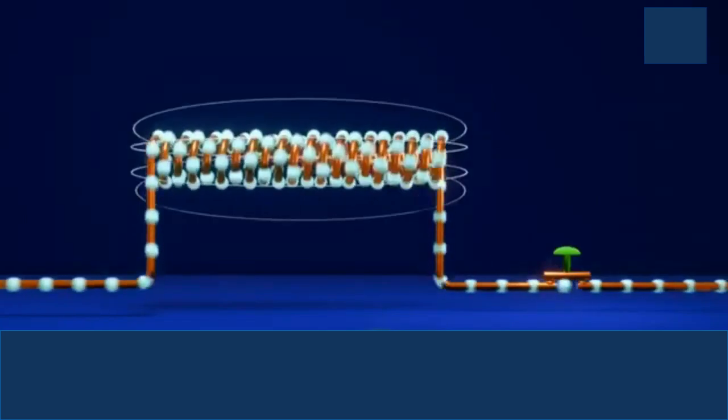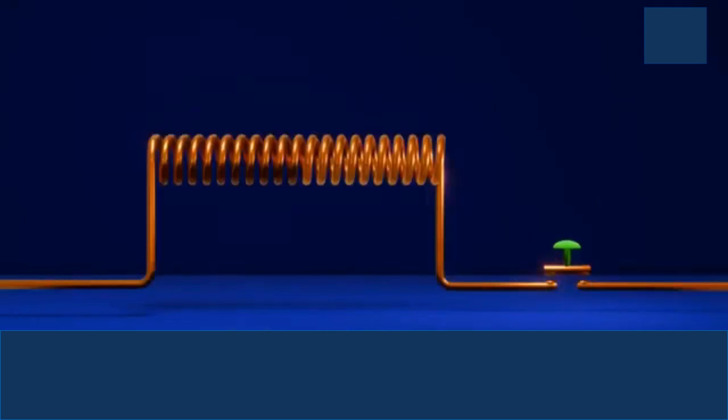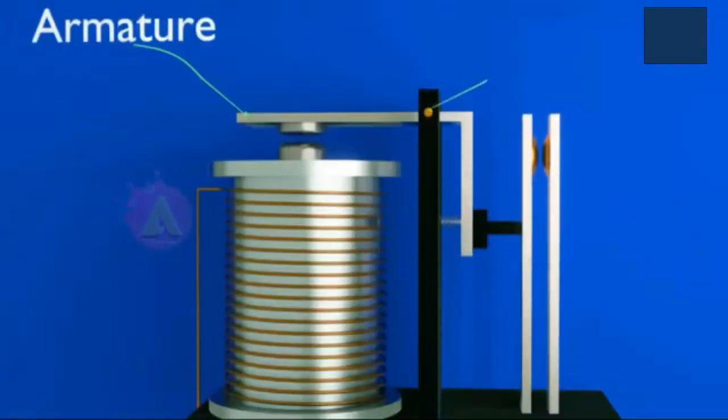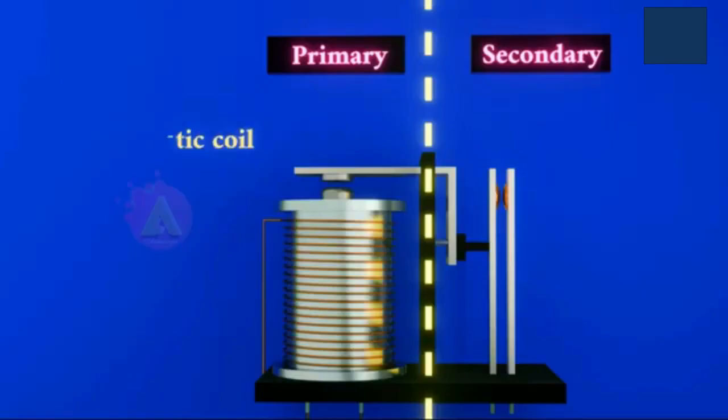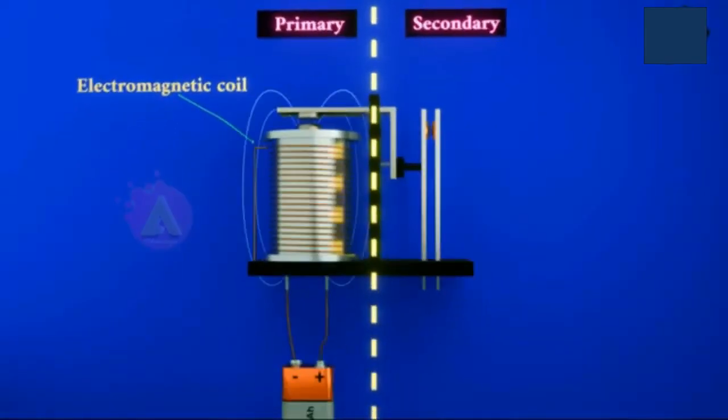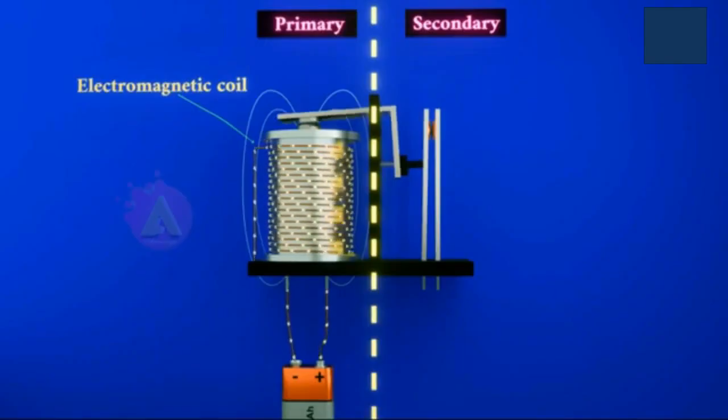When a low-voltage control signal energizes a coil, it creates a magnetic field that pulls a movable contact or armature to change the state of the high-voltage or high-current contact. This allows a small electrical signal to control a much larger one and also provides electrical isolation between the two circuits.